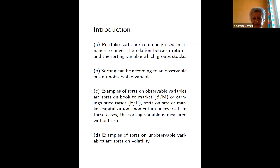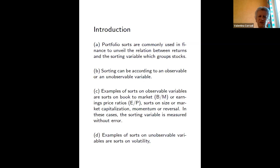Sorting can be done according to observable or unobservable variables. Examples of observable sorting include Fama-French factors like size, book-to-market, and earnings-price ratio, as well as momentum and reversal. There are also several sortings according to unobservable variables, the most famous being sorting according to beta. When sorting according to an unobservable, we need a proxy and must account for the estimation error incurred.